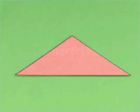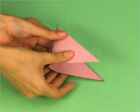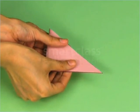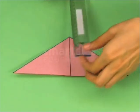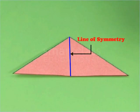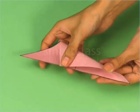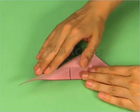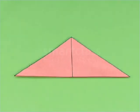Now, take the cutout of the isosceles triangle. Fold it through the vertex common to its equal sides so that the two parts of the triangle exactly overlap each other. Unfold the triangle and draw a line on the crease. This line of fold is the line of symmetry of the isosceles triangle. Try to fold the triangle through the remaining two vertices — no more lines of symmetry are formed. Thus, an isosceles triangle has only one line of symmetry.